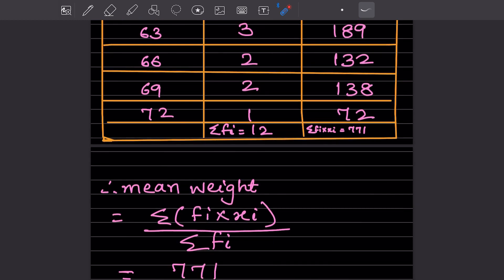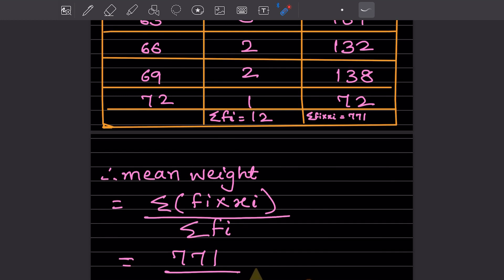The formula when the table is given for finding the mean weight is summation of fi into xi divided by summation of fi.